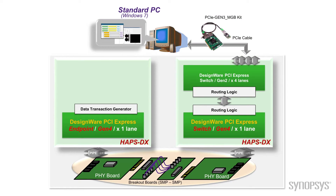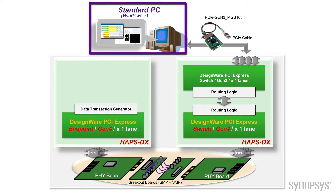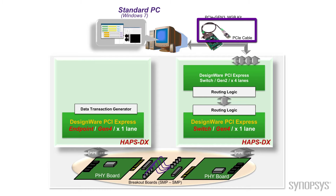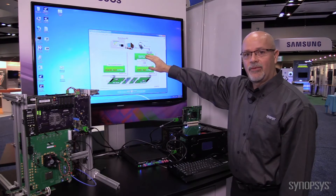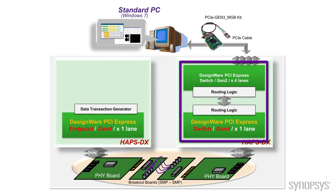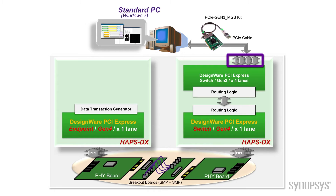We're going to start with a standard PC. Unfortunately today, standard PCs don't support PCI Express Gen 4, so we're going to use an existing system which supports PCI Express Gen 3, connected through our HAPS prototyping PCI Express cable. To convert from PCI Express Gen 3 to Gen 4, we're going to use this PCI Express switch. In this case, we're actually using PCI Express Gen 2, and it will downshift into the system that's in Gen 3.